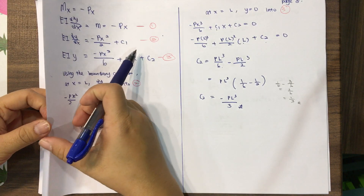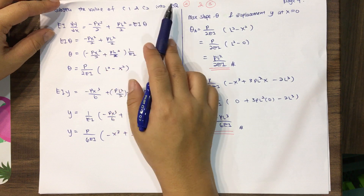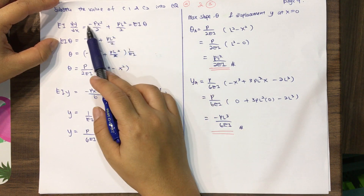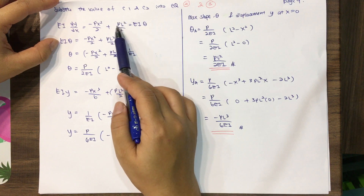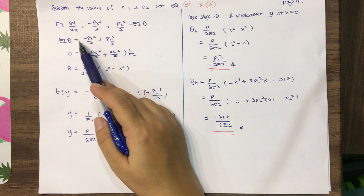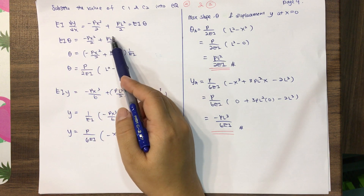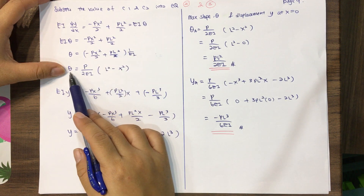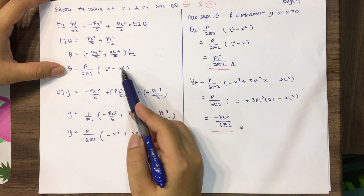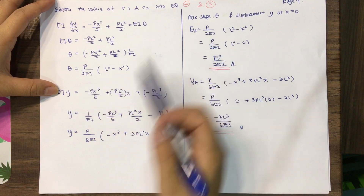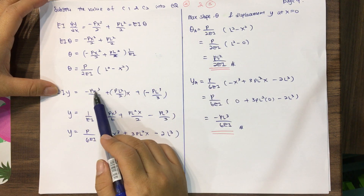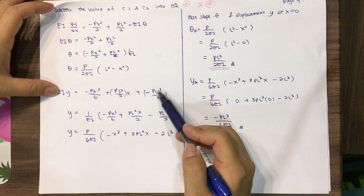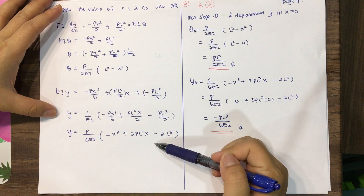After finding C1 and C2, substitute them into equations 2 and 3. The slope equation becomes EI dy/dx equals negative Px²/2 plus PL²/2, which simplifies to theta equal to P/(2EI) times (L² minus x²). The deflection equation becomes EI·y equal to negative Px³/6 plus PL²x/2 minus PL³/3, which simplifies to a corresponding expression for y.